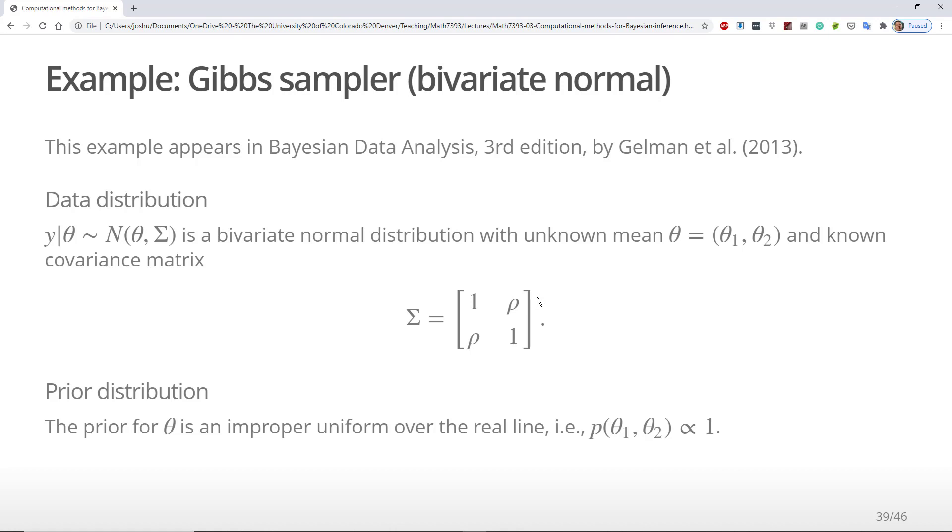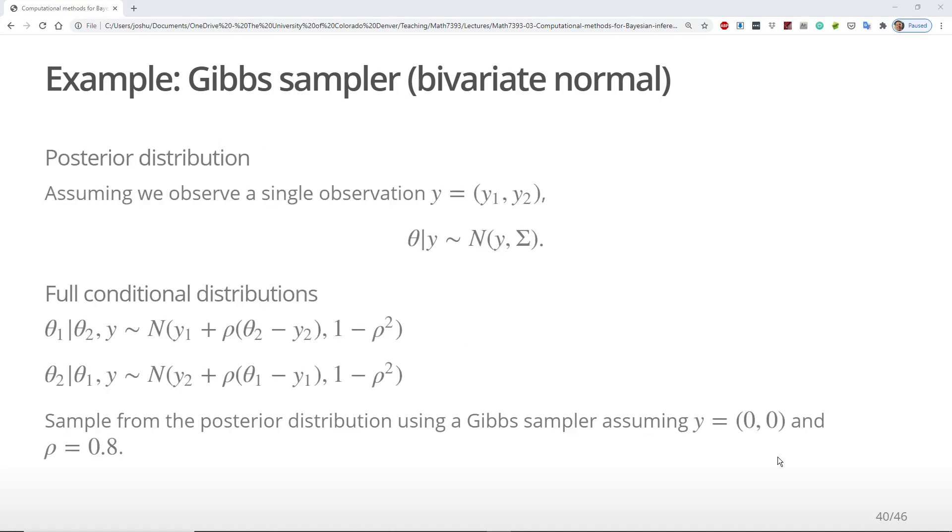Assume the prior distribution is improper. Specifically, the density is proportional to the uniform density over the real line. I don't recommend improper priors in general, but this one will result in a valid posterior distribution. Specifically, the posterior distribution for theta will be bivariate normal with a mean of y, the observed data, and the original covariance matrix of the data distribution. In this case, we know the posterior distribution in closed form.